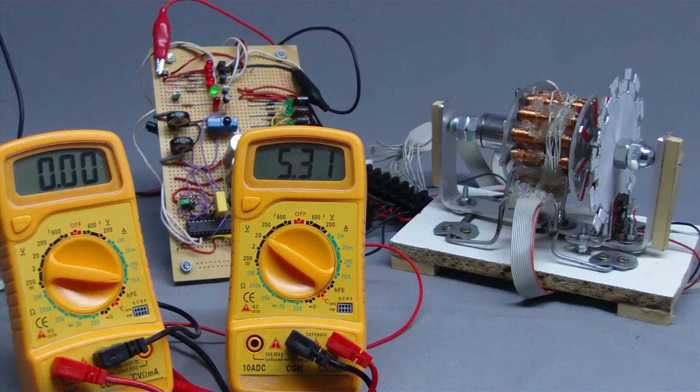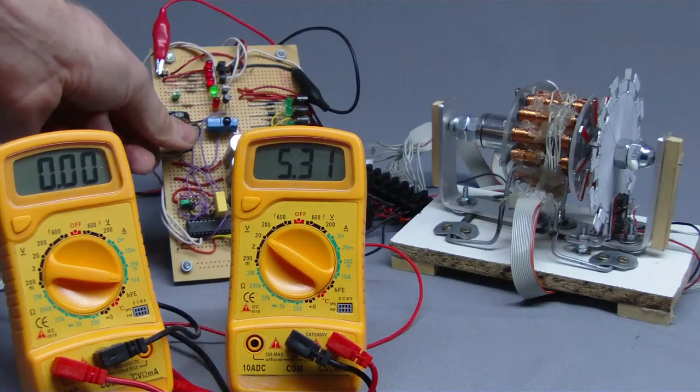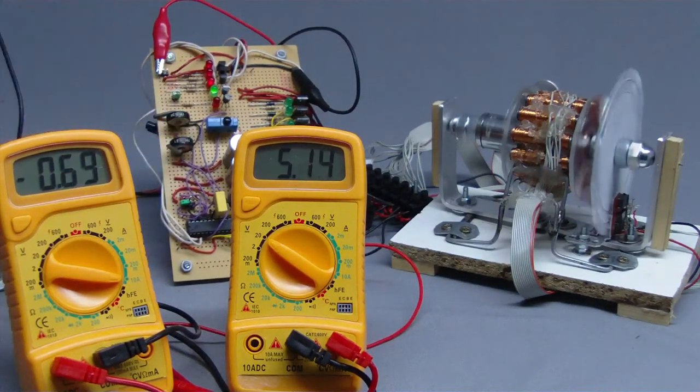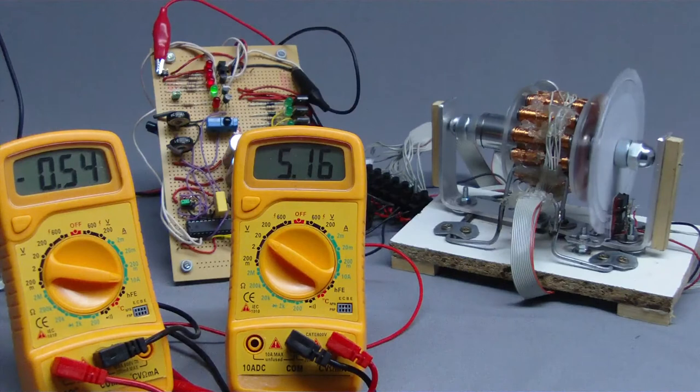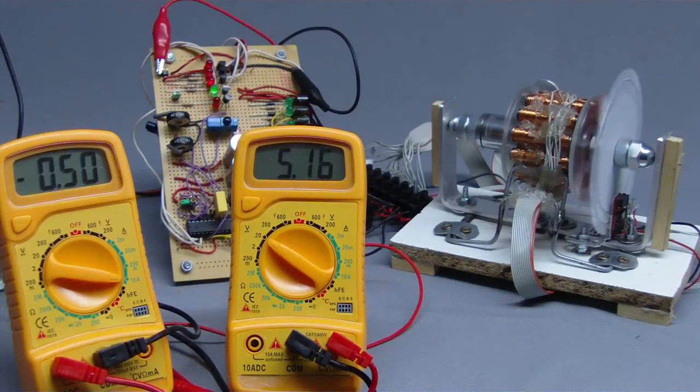Now it is time to measure the electric input power. The right multimeter displays the input voltage and the left one the current running through the stator. As soon as I'm opening the throttle, the current is running through the inductors, which decreases slightly at increasing revolution speeds.